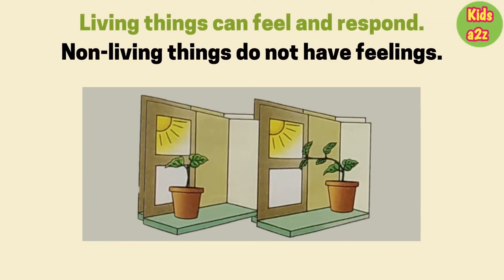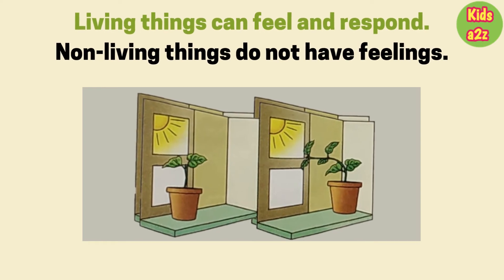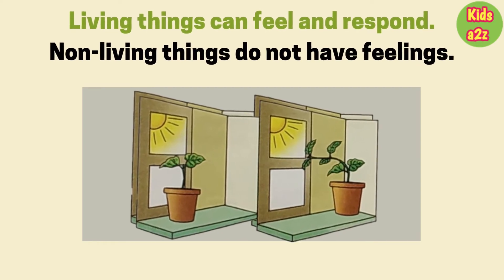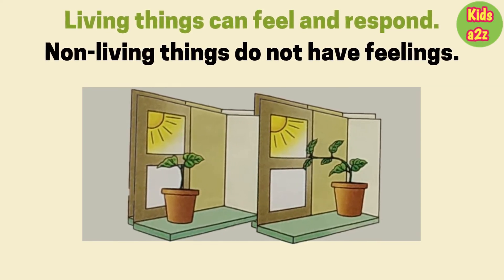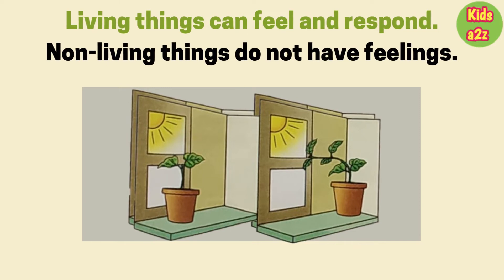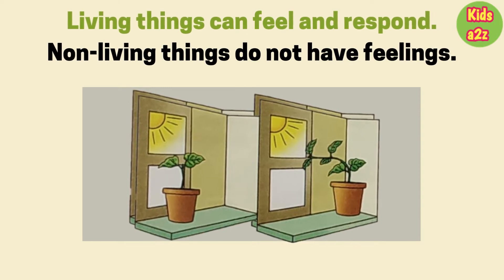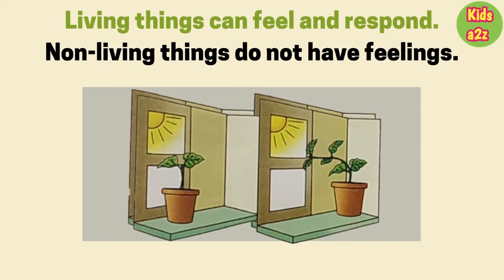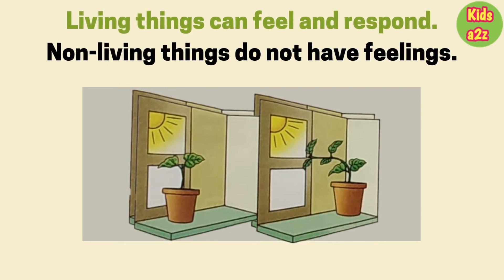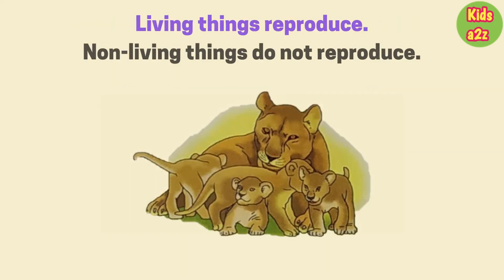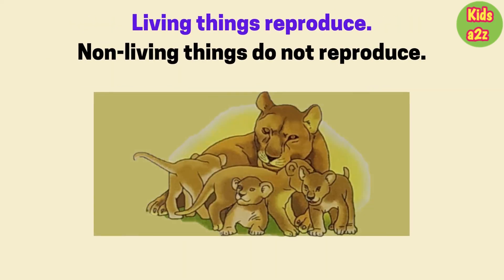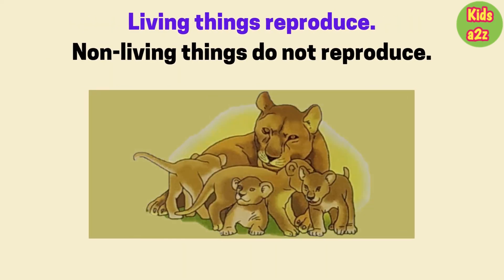Plants do not have sense organs but they do respond. Some plants like the touch-me-not show a quick response. Plants always grow in the direction of the sun. Living things reproduce.